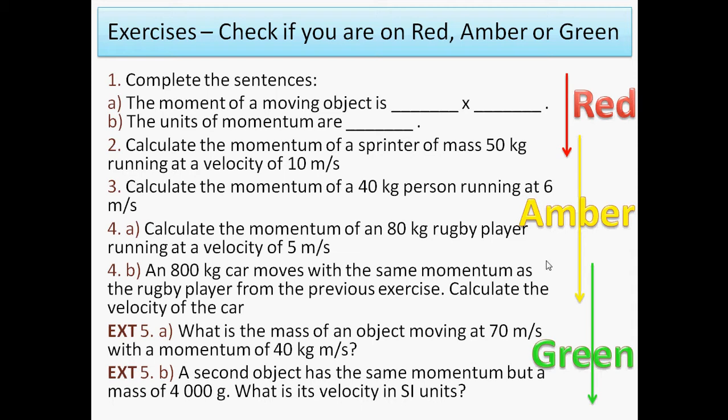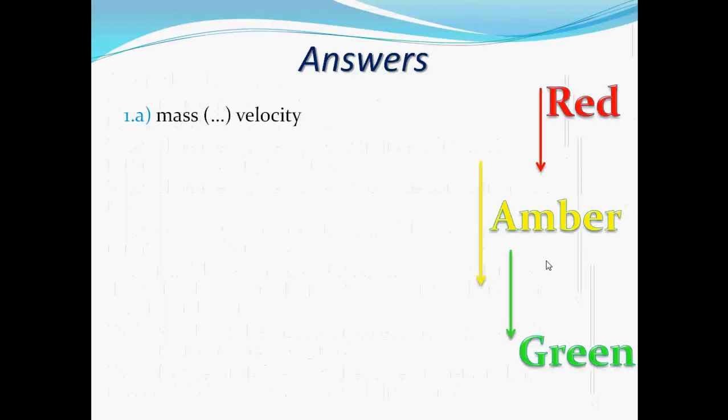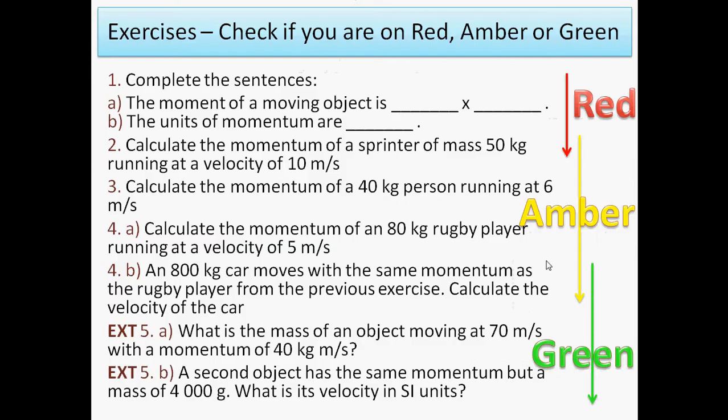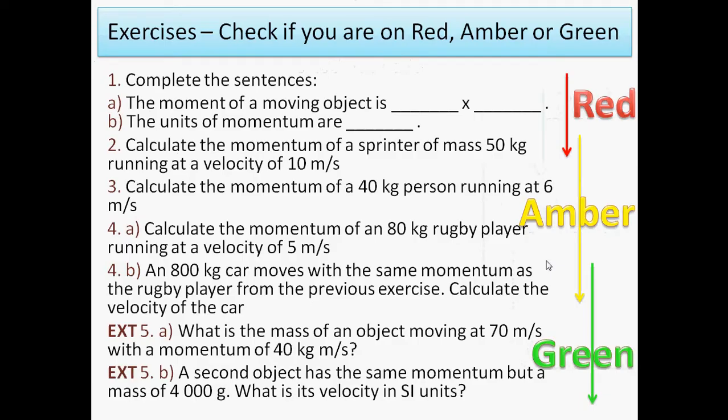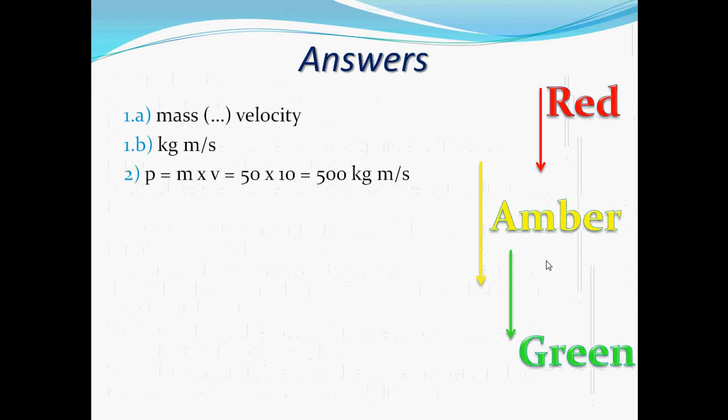The momentum of a moving object is mass times velocity. The units of momentum are kilograms meters per second. Calculate the momentum of a sprinter of mass 50 kilograms running at a velocity of 10 meters per second. So momentum equals mass times velocity, 50 times 10, that gives you 500, and then add the units, kilograms meters per second.